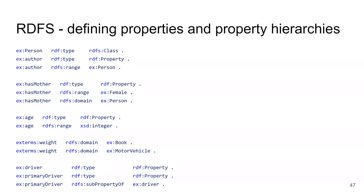Properties connecting a literal value to a node have their range set to a data type IRI, typically from XML Schema. For example: the property 'age' has range xsd:integer, so age values are integers. A warning about the 'weight' property: if you define two domain triples — domain book and domain motorVehicle — it means every subject with a weight predicate is simultaneously an instance of both book and motorVehicle, which is typically wrong.